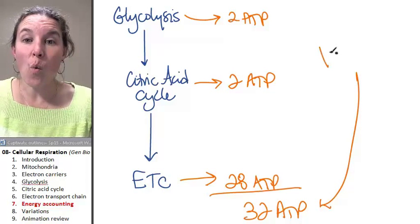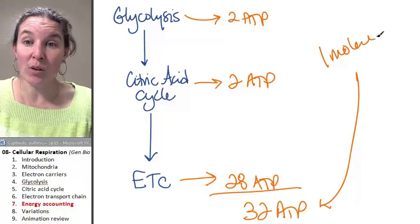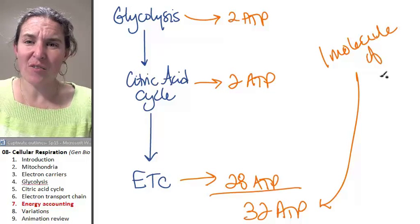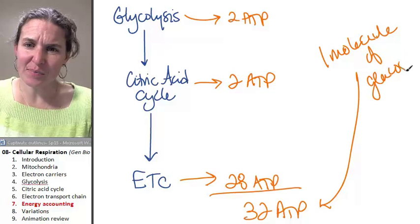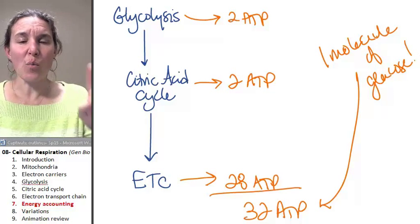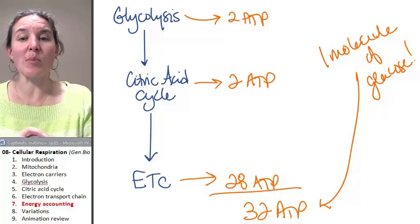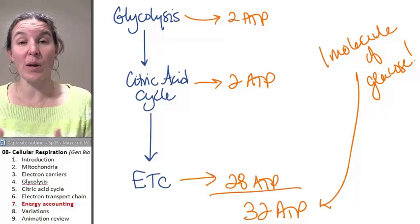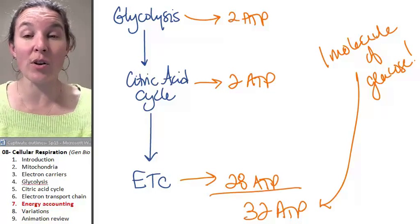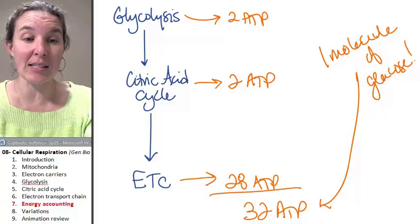From one molecule of glucose. From one molecule of glucose, we were able to produce 32 ATPs to use in whatever capacity that is necessary.